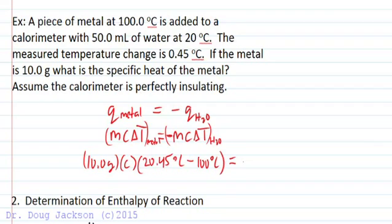And all of that equals the negative of the mass of water. Well 50 milliliters is 50 grams by definition. So 50 milliliters of water, 1 milliliter per 1 gram, 50.0 grams at 20 degrees Celsius.